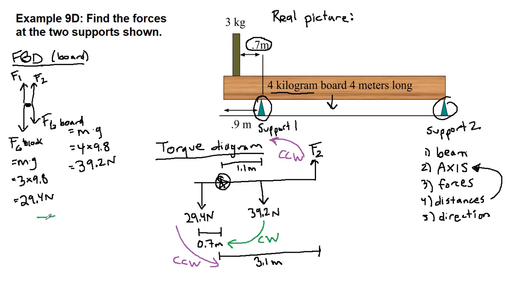So when we write our torque equation, all of the clockwise torques are equal to all of the counterclockwise torques. We will now have two terms on the right side based on where we chose our axis. All right, so the clockwise torques, we have the 39.2 newtons, and the distance associated with that force is the 1.1 meters.